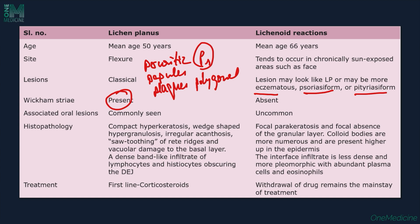Histopathology of lichen planus shows compact hyperkeratosis, wedge-shaped hypergranulosis, saw-toothing of the rete ridges, vacuolar damage to the basal layer, and dense band-like inflammatory infiltrate at the DEJ. In lichenoid reactions, we see focal parakeratosis, complete absence of the granular layer, colloid bodies that are numerous and present higher up in the epidermis, and a less dense, more pleomorphic infiltrate with abundant plasma cells and eosinophils. Treatment of lichen planus is with corticosteroids, whereas in lichenoid reactions the most important step is to stop the offending drug; topical steroids and antihistamines can also be given.